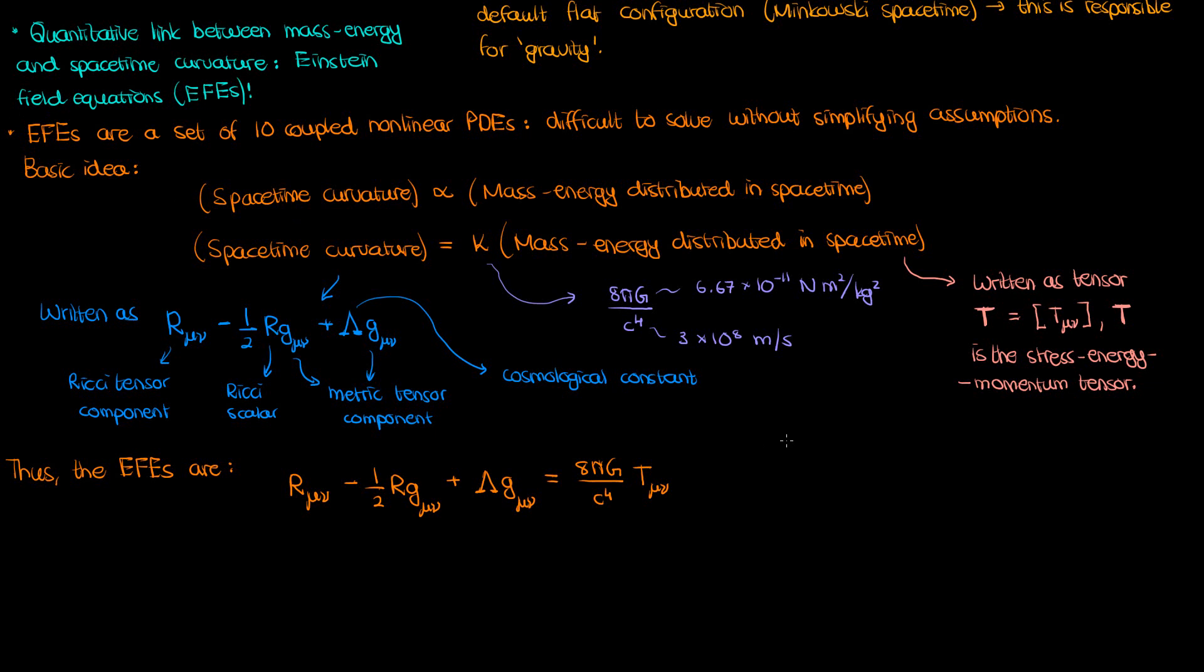These Einstein field equations govern four-dimensional spacetime, so each of these tensors can be written as 4x4 matrices, so the mu and nu actually vary from 0 to 3, 0 being the index for time and 1, 2, and 3 being the spatial indices x, y, and z. But these tensors are also all symmetric, so the matrices representing them are equal to their transpose. This means that instead of solving 16 separate equations for each of the 16 components, we just have to solve 10 equations, because 6 of the equations will just be repeated.